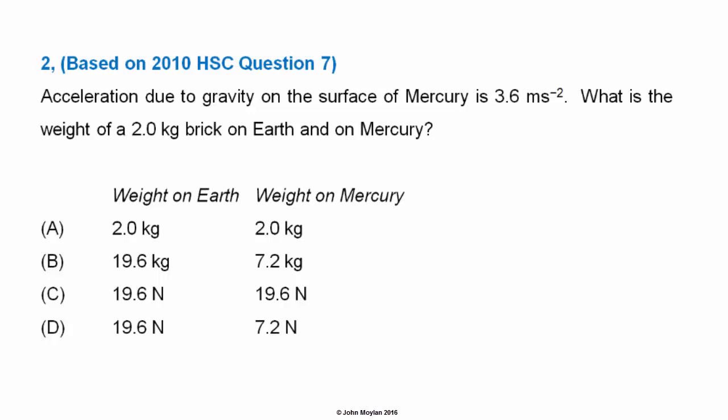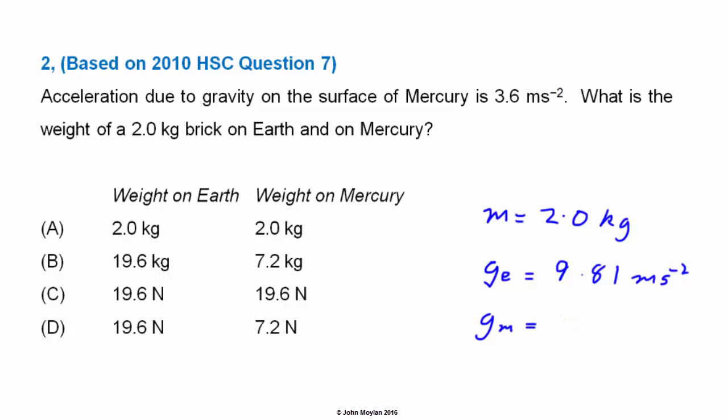Our second question is based on question 7 from the 2010 HSC exam. The acceleration due to gravity on the surface of Mercury is 3.6 m/s². What is the weight of a 2 kilogram brick on Earth and on Mercury? We write in the information given: mass equals 2.0 kilograms, acceleration due to gravity on Earth from the HSC data tables is 9.81 m/s², and acceleration due to gravity on Mercury (g subscript m) is 3.6 m/s².